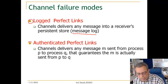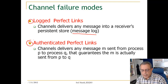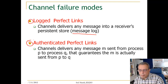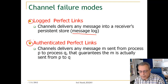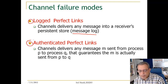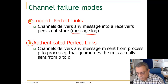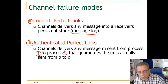Other types of channels are authenticated perfect links. These are channels used to avoid security breaches over the link. An authenticated perfect link guarantees that if a receiver — in this case process Q — receives a message from process P, it knows that it is actually P that has sent this message.